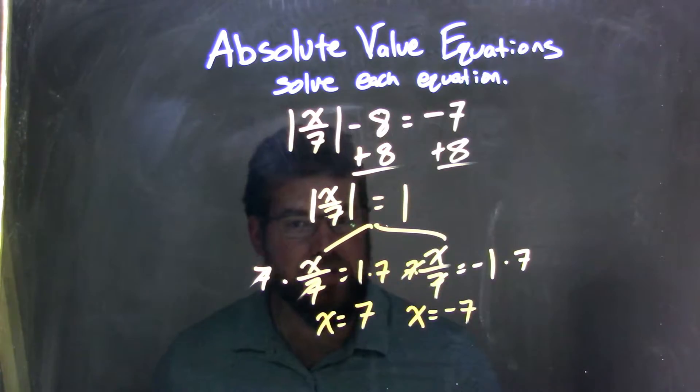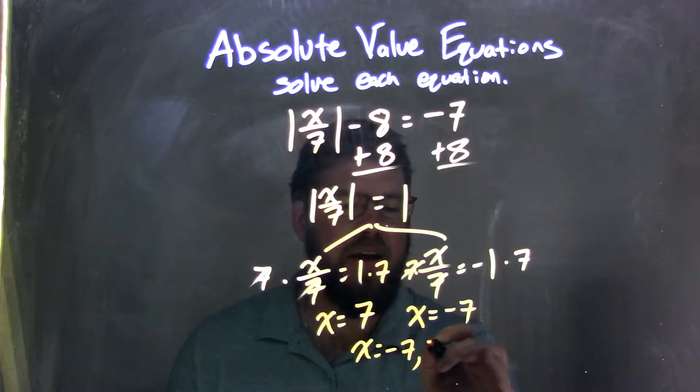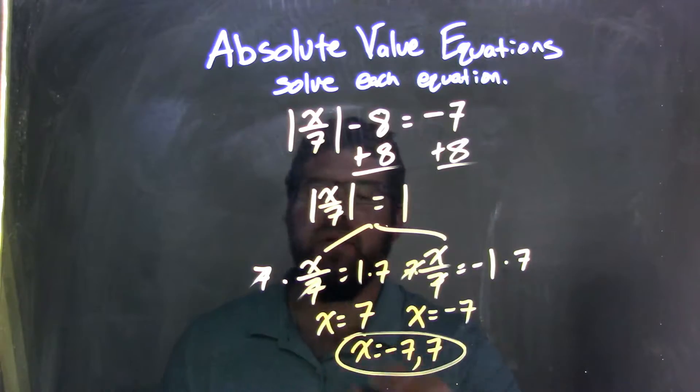We write from least to greatest, because that looks nice to me. So our final answer is x equals negative 7 and positive 7. And there we are.